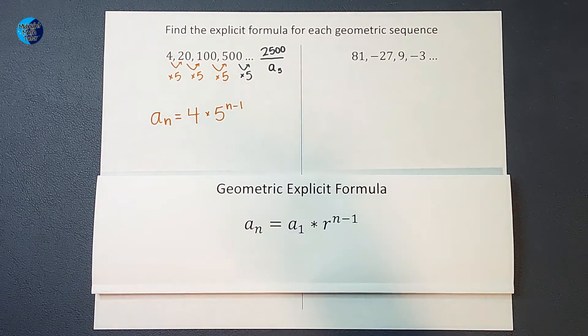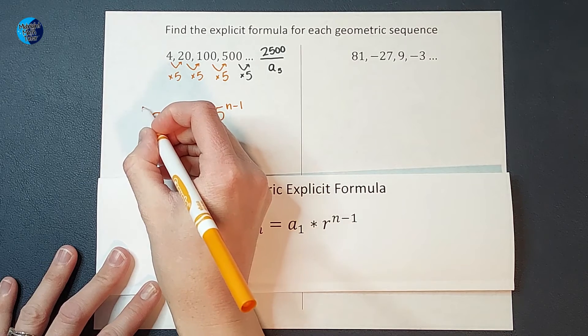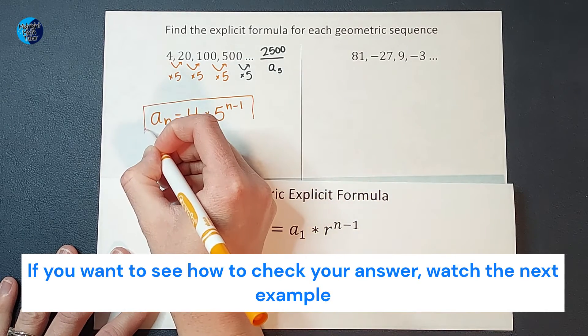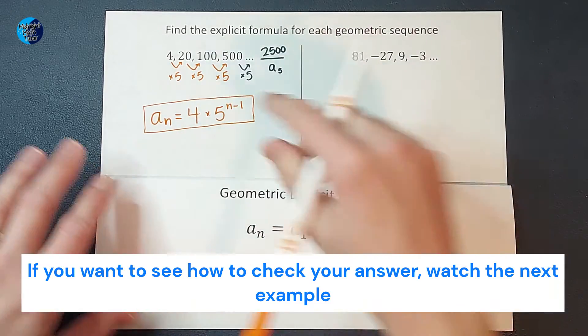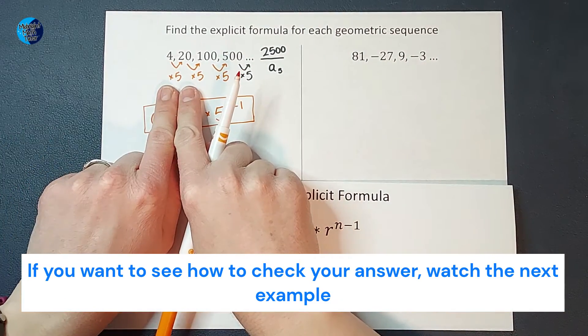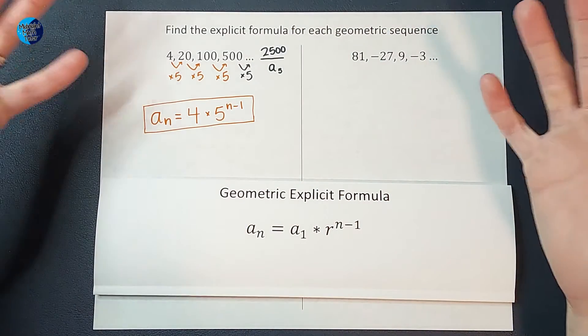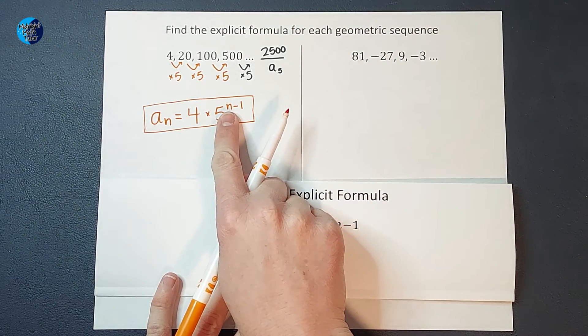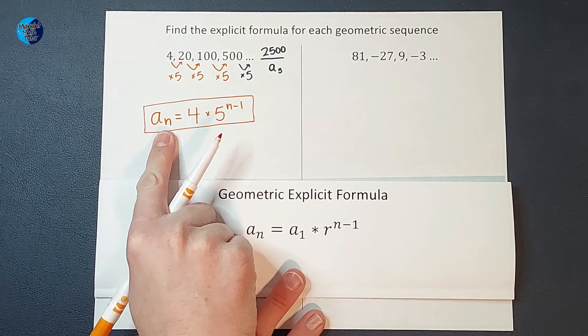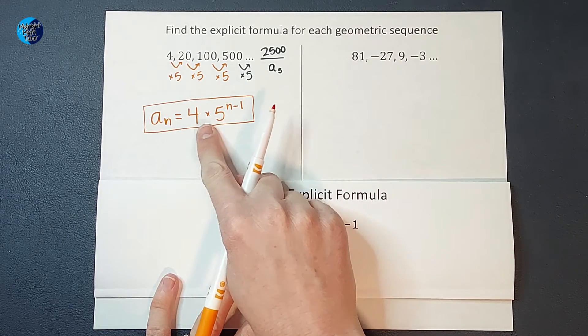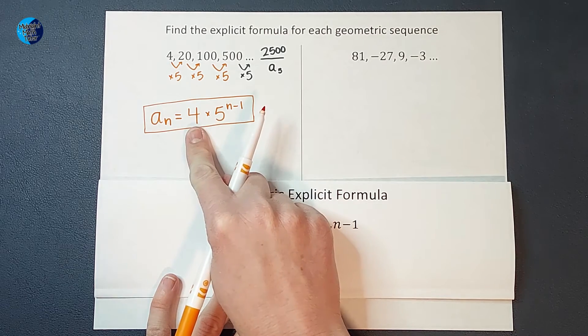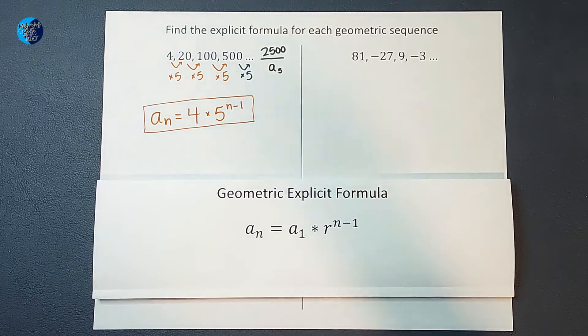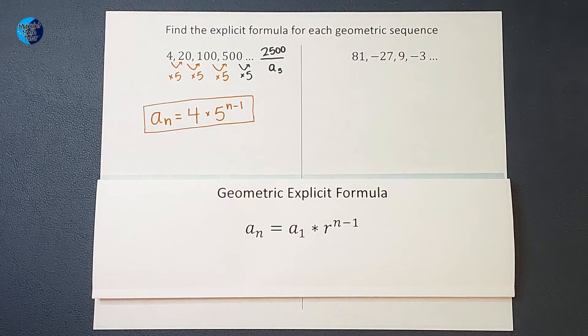All right? Isn't that cool? That is my answer right there, you guys. And I hope it makes sense why that's my answer. If you wanted to find the hundredth term in this sequence, you would multiply by 5 99 times, right? So that is why the N minus 1. If I plugged in that hundred, I would get 4 times 5 to the hundred minus 1, so 99th power, meaning times 4 by 5, 99 times, and you'll get the hundredth term, right? So cool. Let's do it again.